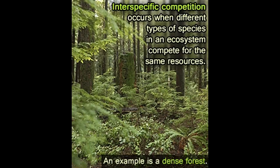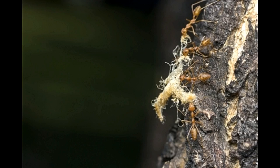Thus, competition may take place in two ways at an individual organism level, namely exploitative competition and interference competition. Exploitative competition refers to the availability of fewer limiting resources as a result of usage by a particular species, making them insufficient or no longer available to the competing species.